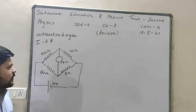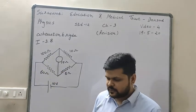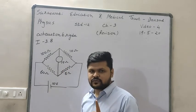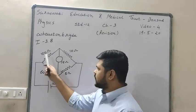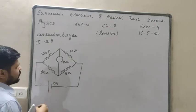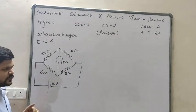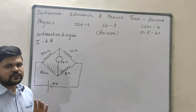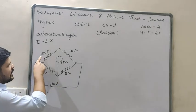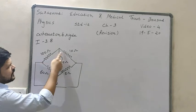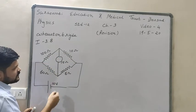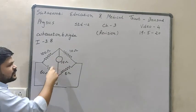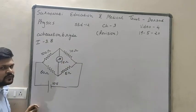We are asked to find out the current flowing in each branch of this circuit. First, we check whether the Wheatstone Bridge is in balanced condition. We check R1/R2 and R3/R4 — here R1/R2 is 10 but R3/R4 is 12. Since these are not equal, the Wheatstone Bridge is not in balanced condition, so some current will flow through the galvanometer.